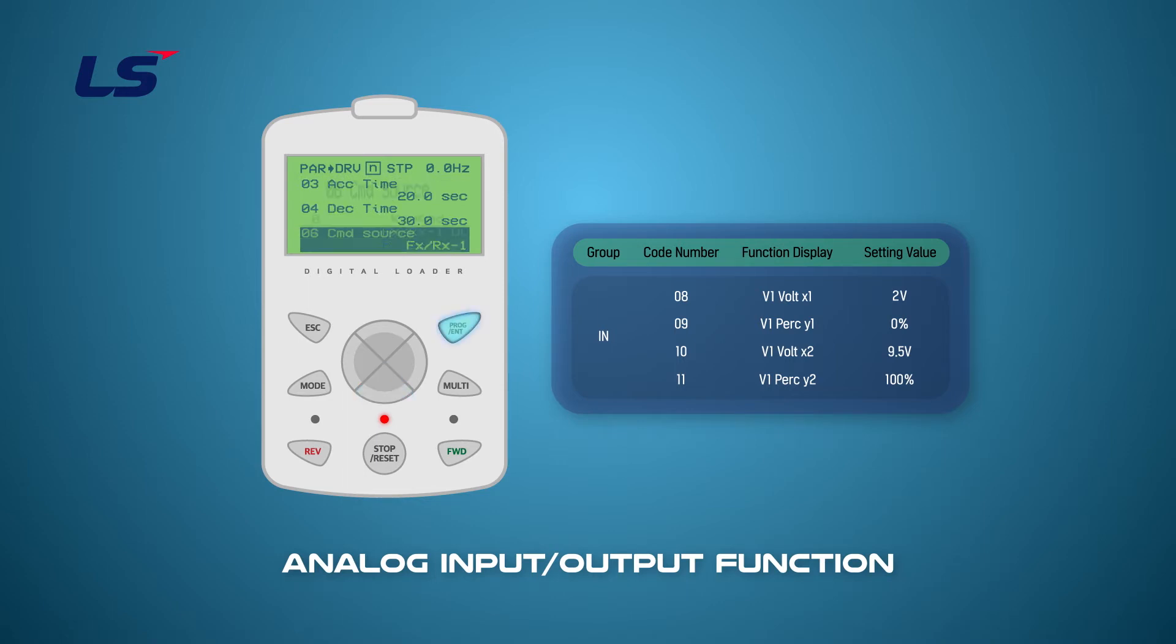Set to FX RX1 at DRV6 and set to V1 at 7 before moving to IN-group using the direction key. Set the minimum input voltage at IN-group 8 to 2 volts and the corresponding input level to 0% at IN-group 9.